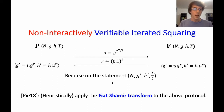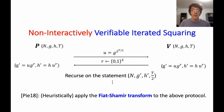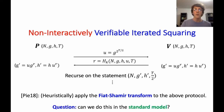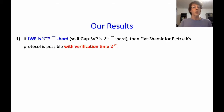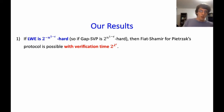In this work, we ask whether we can do this compilation in the standard model. Our answer is yes. If the learning with errors problem (LWE) is sufficiently hard, then Fiat-Shamir for this protocol can be instantiated. We have a few quantitative variants: if LWE is 2^(-n^(1-ε)) hard — a strong sub-exponential assumption — then you can do Fiat-Shamir for this protocol where the verifier runs in time 2^(λ^ε). Under stronger LWE assumptions you can get faster verification.